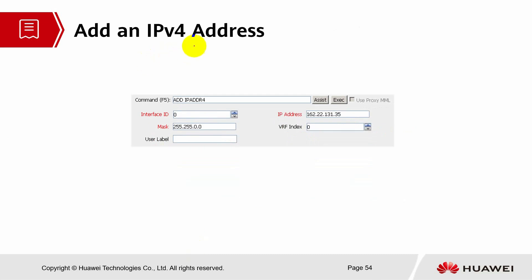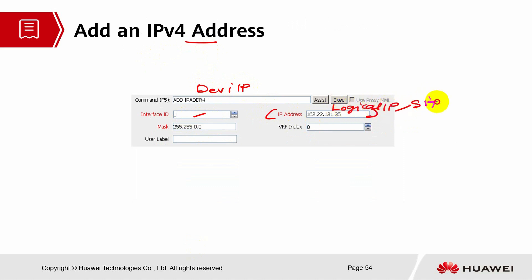Next, ADD IPv4 ADDRESS. This command is replacing the DEVICE IP command. We need the interface ID — the one that we configured earlier — bound with the logical IP. This logical IP can belong to signaling IP, service IP, OM channel, and clock ID.